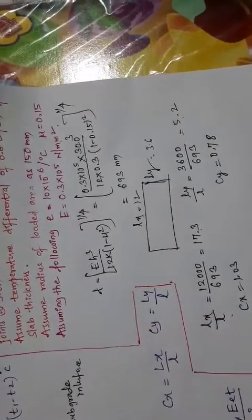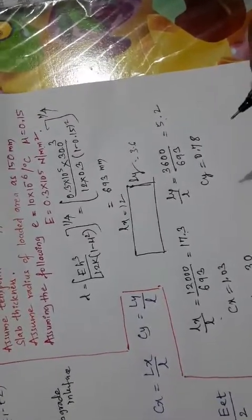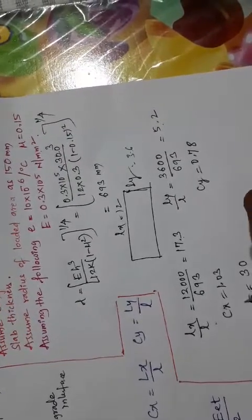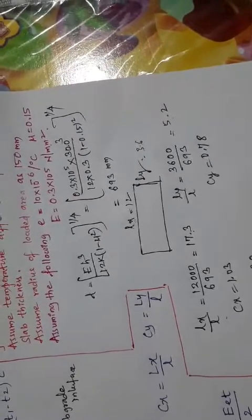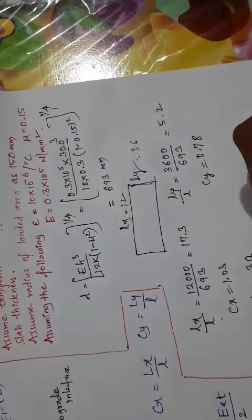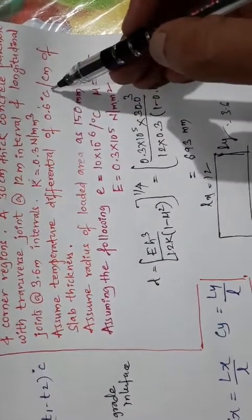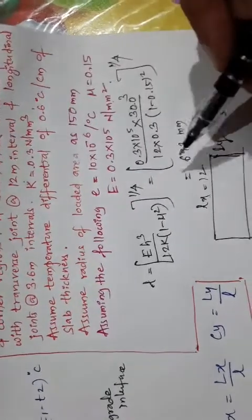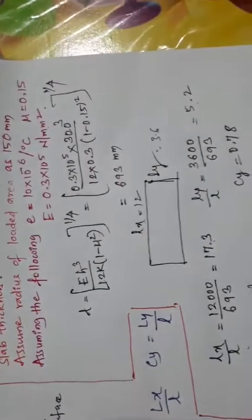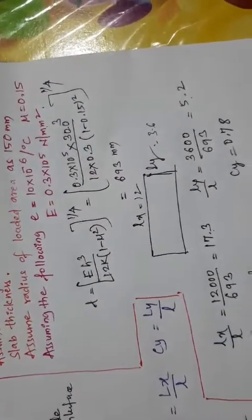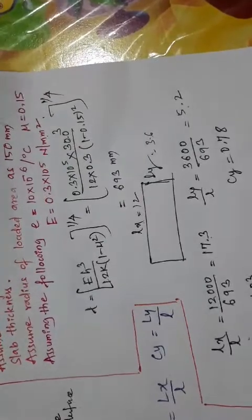Next I have to find T. T is the warping temperature. I have slab thickness as 30 centimeters. They given you the temperature difference as 0.6 degree centigrade per centimeter. My slab is 30 centimeters. Per centimeter, how much? 0.6. So if I multiply with 0.6, I'm going to get it as 18 degrees Celsius. This is my going to be warping temperature T.